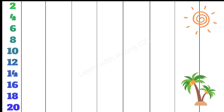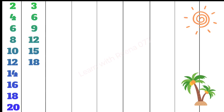3 1s are 3, 3 2s are 6, 3 3s are 9, 3 4s are 12, 3 5s are 15.